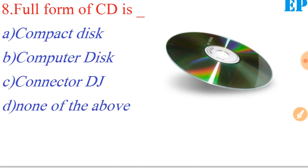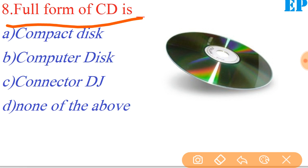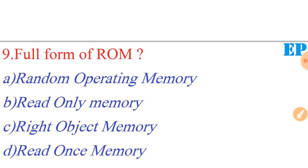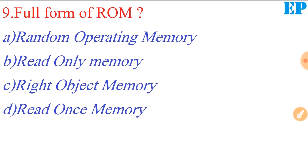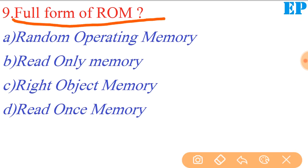Step one: the full form of CD-ROM. The CD full form of ROM is what? The full form of ROM is Read Only Memory. Read Only Memory is the full form of ROM.